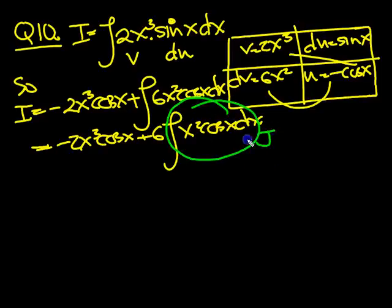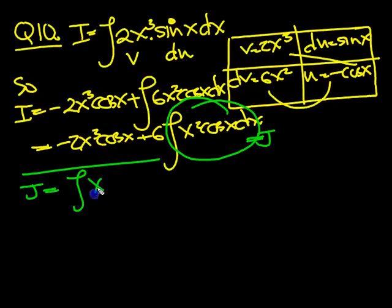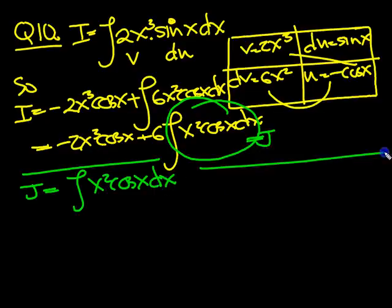And we'll call that j, and we'll draw a line across the page and write j equals, and we've got the integral of x squared cos x dx. Let's draw our grid.